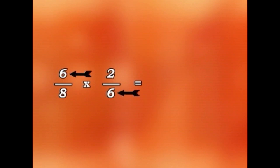We have 6 and 6, but we also have 2 and 8. 2 and 4, 2s are 8. So 6 over 8 times 2 over 6 is the same as 1 times 1 over 4 times 1 equals 1 over 4.